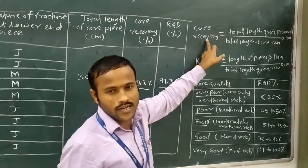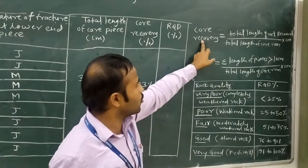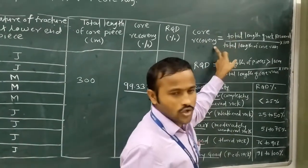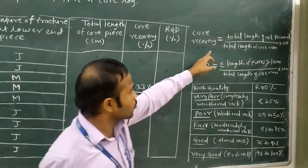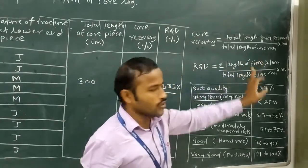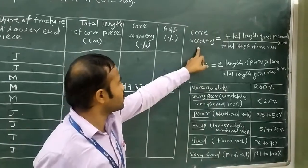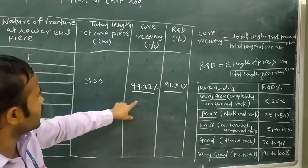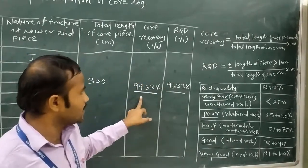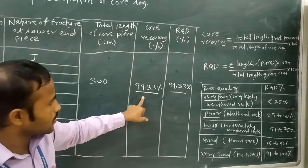The formula for core recovery is: total length of rock recovered divided by the total length of the core run, multiplied by 100. Using this formula, we get a core recovery of 99.33 percent for this sample.